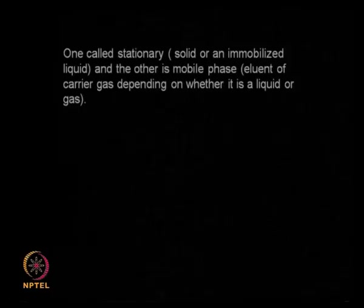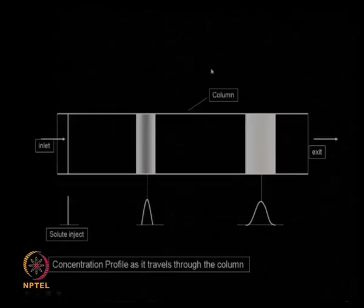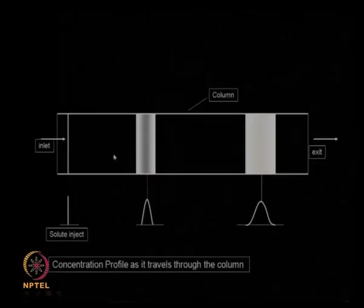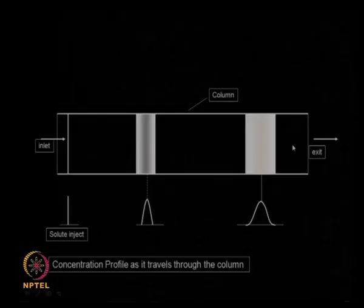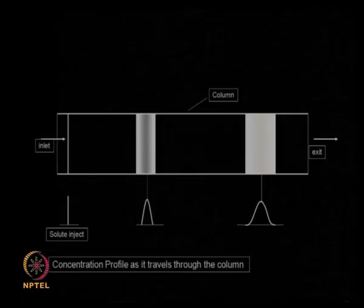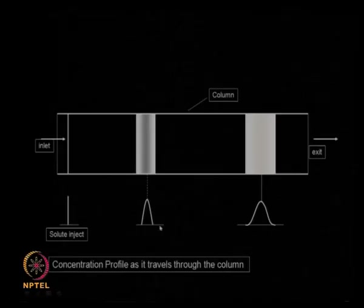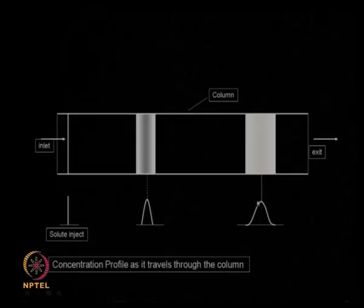Typically, chromatography consists of a long column — possibly up to 100 feet — which is packed. The solute is injected at the inlet and keeps traveling due to interaction with the stationary phase components, involving adsorption, desorption, or partition. The concentration of the solute spreads as it moves; a very sharp injection at the beginning slowly spreads out like a Gaussian peak — a normal distribution or bell shape — though it is never perfectly so.